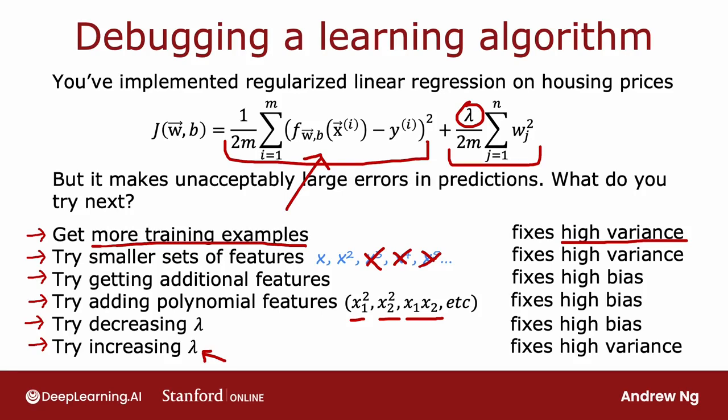Conversely, if your algorithm has high bias, then that means it's not doing well even on the training set. So if that's the case, the main fixes are to make your model more powerful, or to give it more flexibility to fit more complex or more wiggly functions. And so some ways to do that are to give it additional features, or add these polynomial features, or to decrease the regularization parameter lambda.